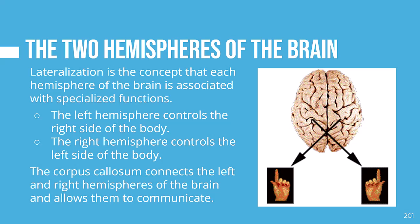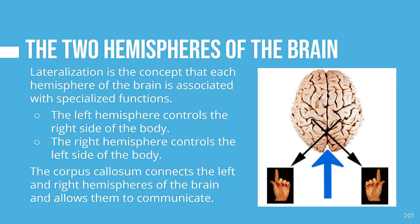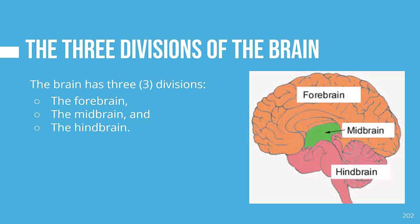Lateralization is the concept that each hemisphere of the brain is associated with a specialized function. The left hemisphere controls the right side of the body, and the right hemisphere controls the left side of the body. The corpus callosum is the connective tissue that connects the left and right hemispheres — a large bundle of more than 200 million myelinated nerve fibers. Damage to the corpus callosum or disruptions with these nerve fibers prevent both hemispheres from communicating properly. Abnormalities with the corpus callosum have been identified in maltreated or abused children.